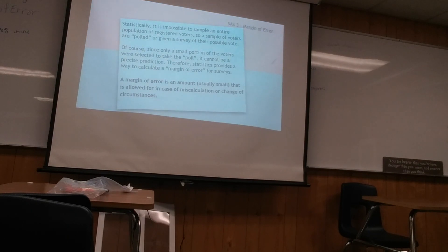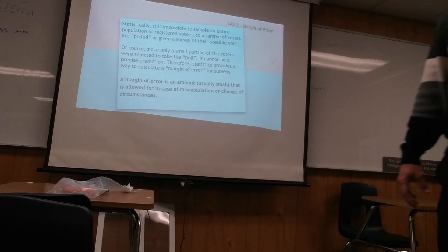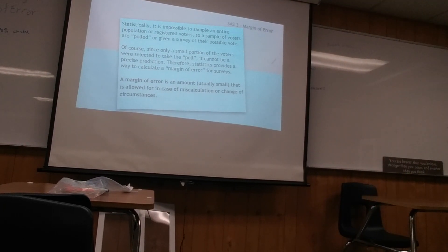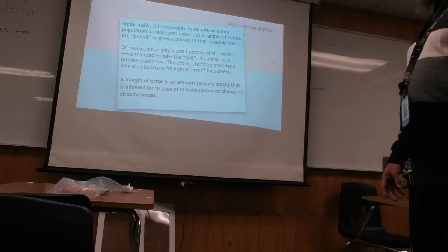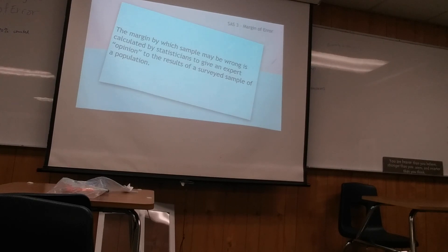Now for the margin of error lesson. It is statistically impossible to survey an entire population of registered voters, so a sample is polled instead. Since only a small portion is selected, it cannot be a precise prediction. Therefore, statistics provides a way to calculate a margin of error — an amount, usually small, that is allowed for in case of miscalculation or change of circumstances. The margin by which the sample may be wrong is calculated by statisticians to give an expert opinion on the results.